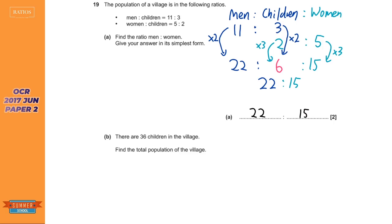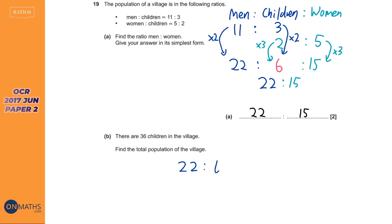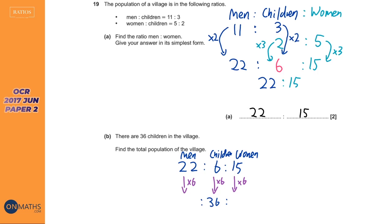That's not an easy skill but it's coming up a lot more frequently in exams. The next question says we know there are 36 children in the village. It's important to note that OCR paper 2 is a non-calculator paper. We've got the ratio that involves all of the people — men, children, and women. All I need to do is convert the children part to 36, so I'm going to times that by 6. Whatever I do to one side of a ratio I've got to do to the other sides.